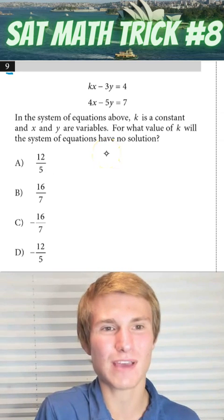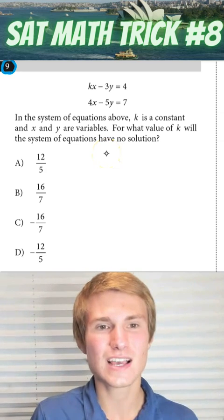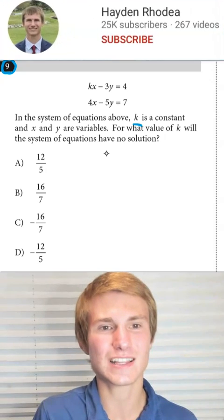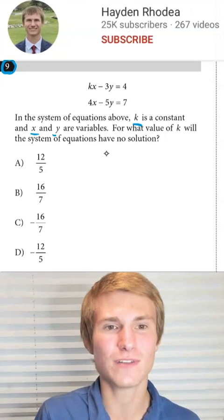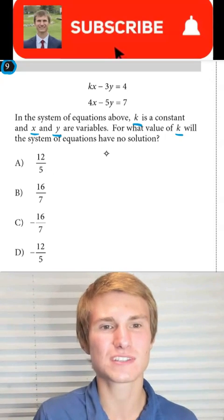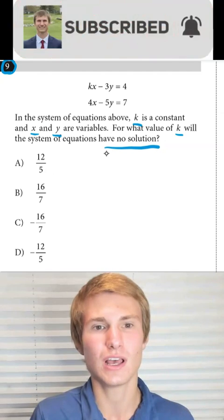Here's how to solve this SAT math problem super easily. It says, in the system of equations above, k is a constant and x and y are variables. For what value of k will the system of equations have no solution?